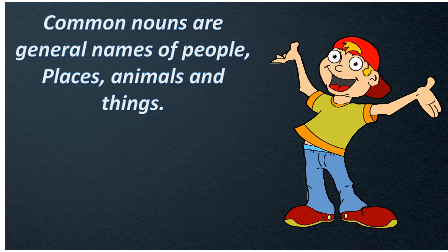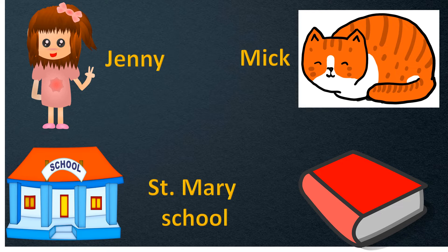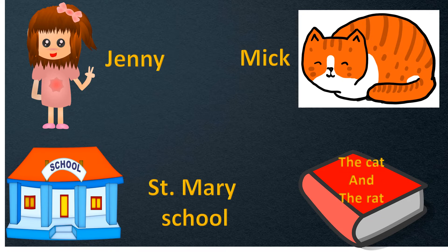Now let us know what are proper nouns. Children, here if you can see, I have given a specific name to the girl, which is a common noun. The specific name I have given here is Jenny. Similarly, I have given a specific name to the school — Saint Mary school. I have given a name to the cat also: Mick. So if I say Mick, it is the specific cat.